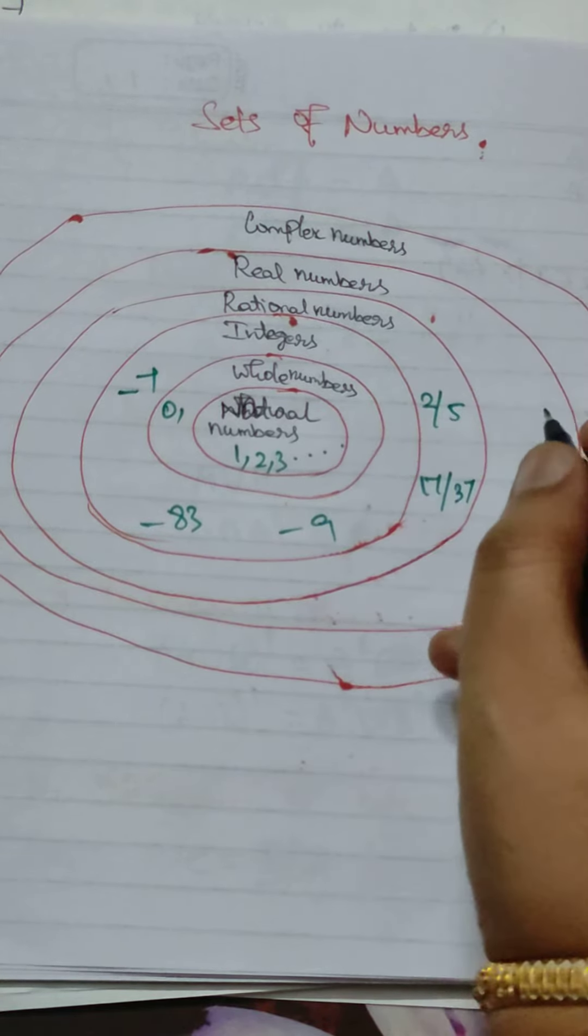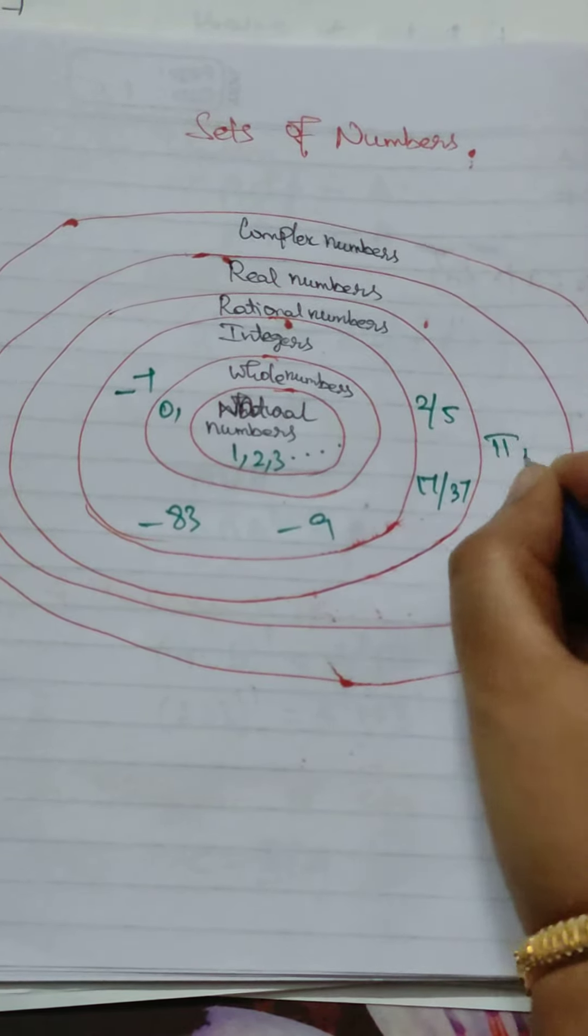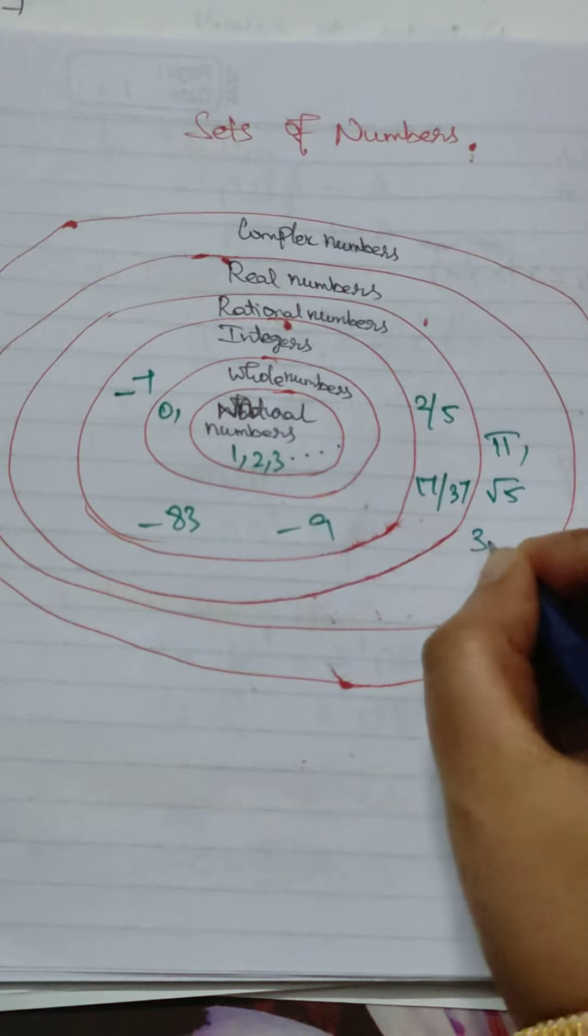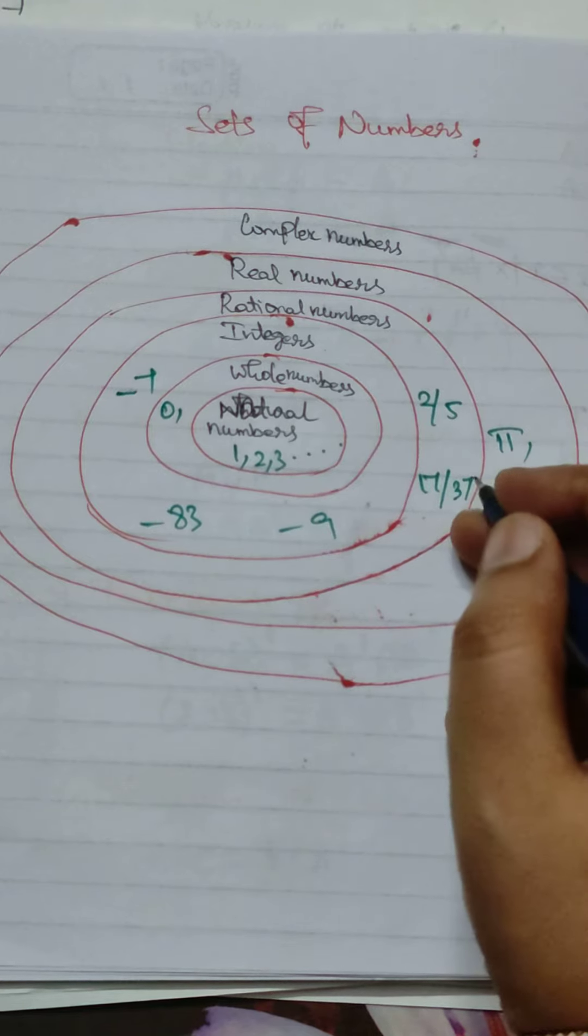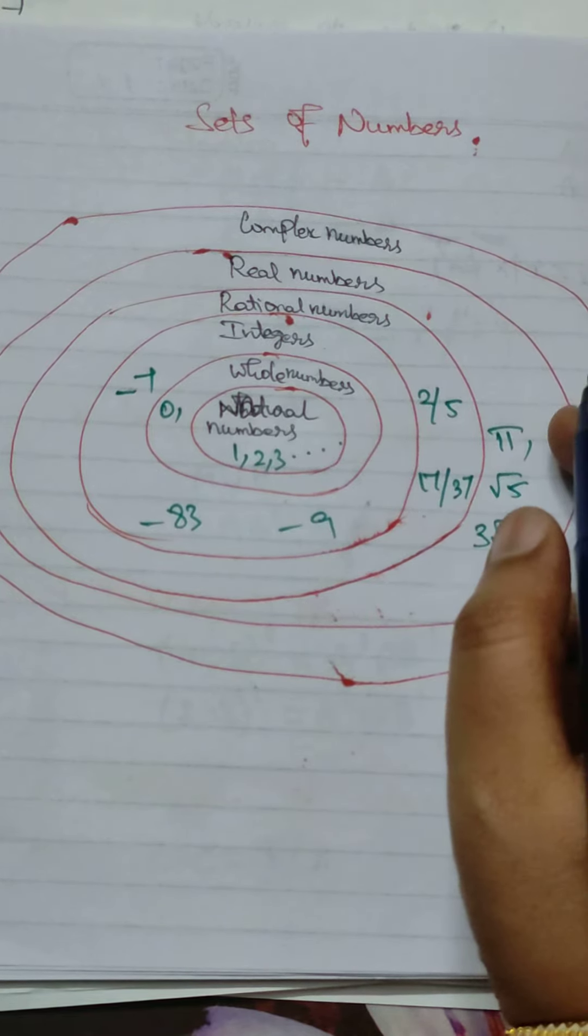Next one is real numbers. Real numbers means pi, root 5, 3 root 2. These cannot be written as fractions. These are real numbers.